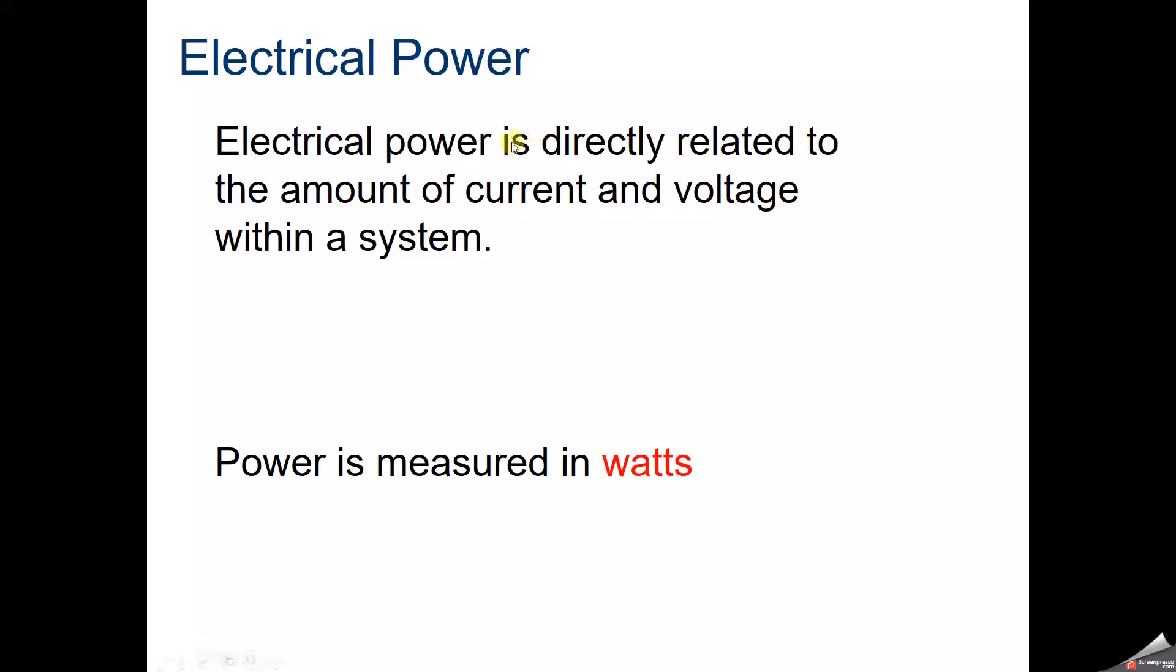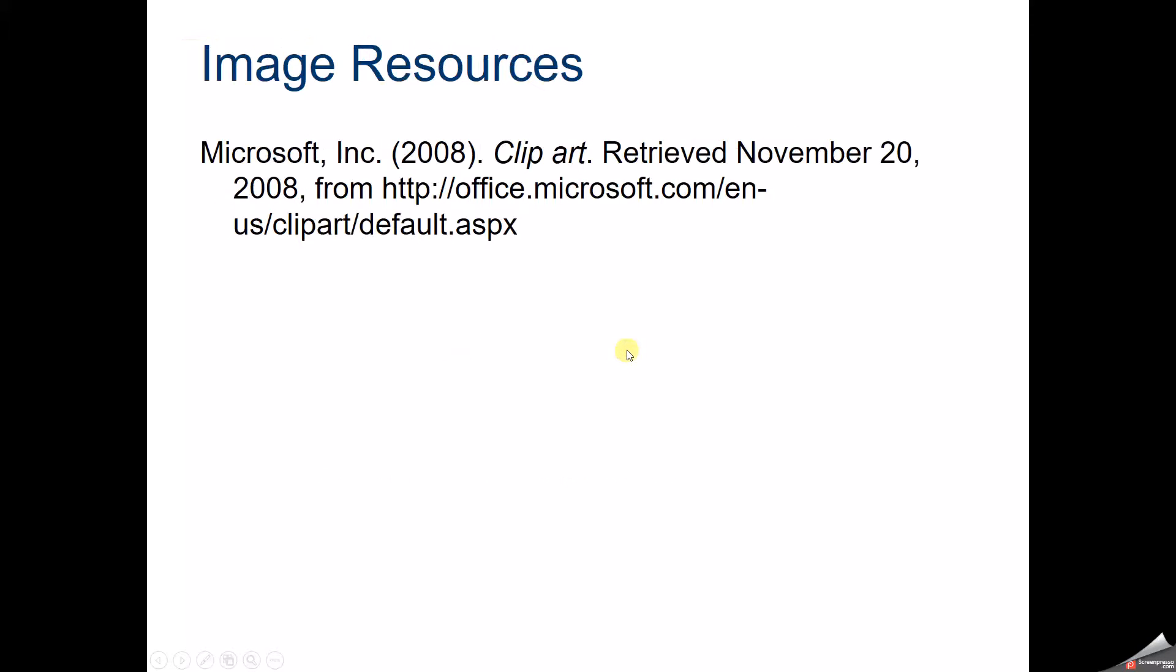One last thing to tack on here, electrical power. Electrical power is directly related to the amount of current and voltage within a system. So power is your watts, your light bulbs that you measure in watts. Your power is equal to your current times your voltage. So power, current times voltage.